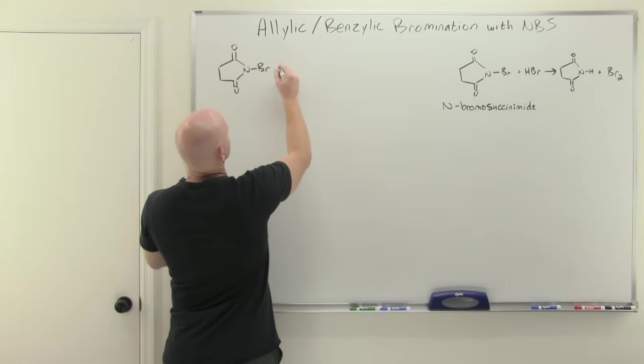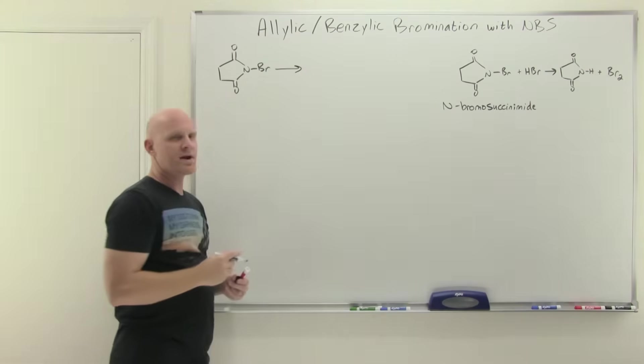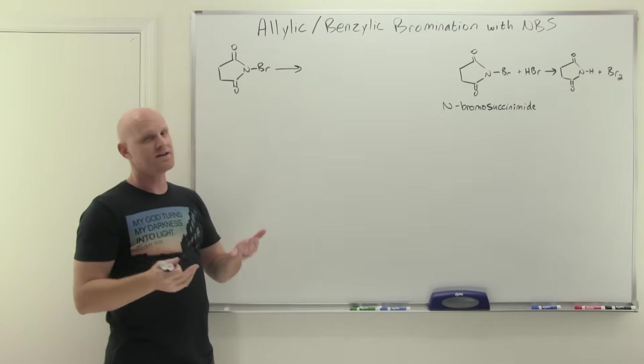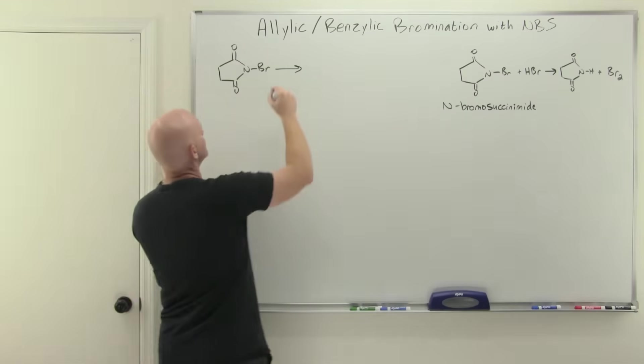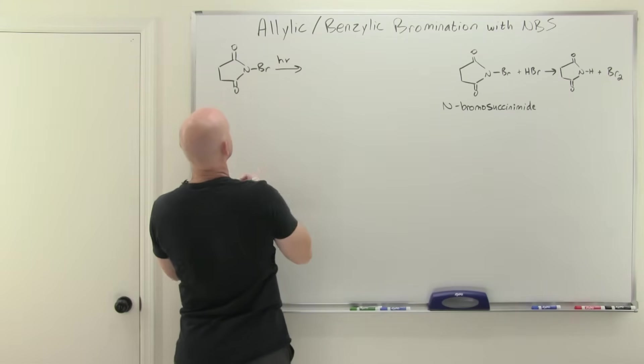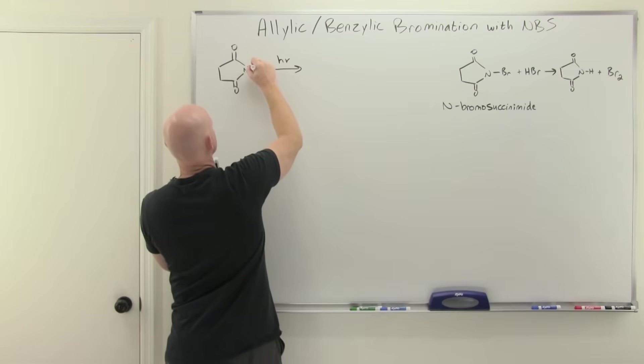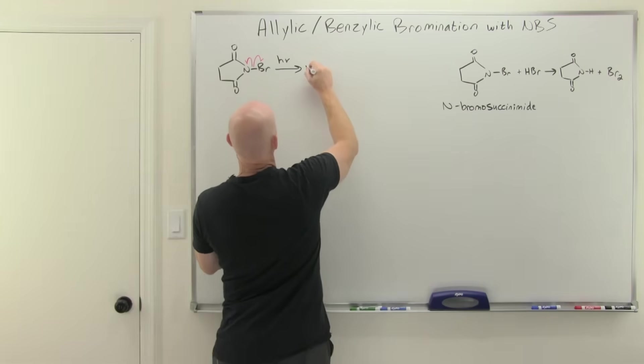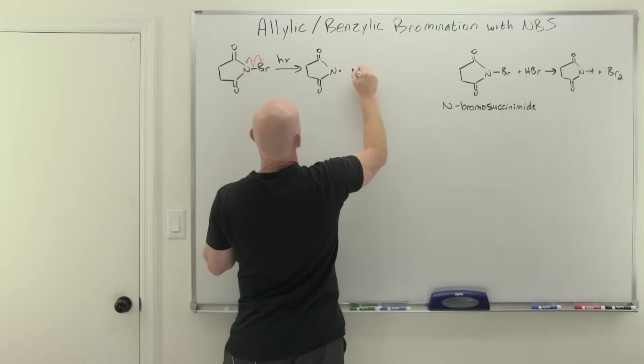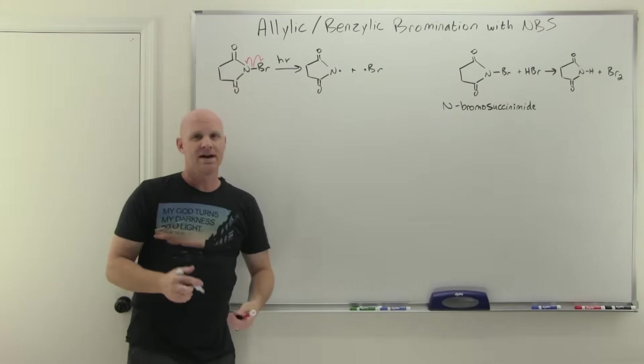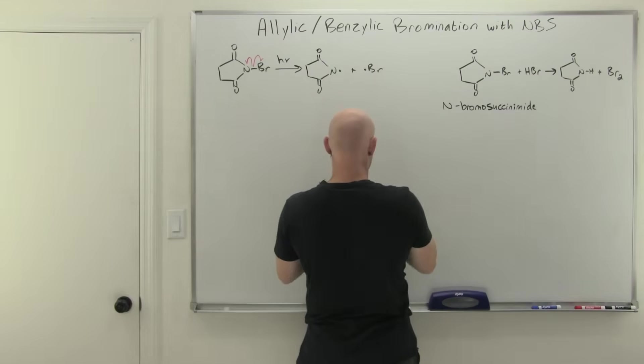All right. So just like with our other free radical halogenations, we've got to get this party started. We've got to do an initiation. We've got to create some radicals. And in this case, again, light, heat, or peroxide, or some other radical chain initiator is going to work. And again, light's the most common. And in this case, we're going to break this nitrogen-bromine bond. Use just the right amount of energy of light, if you will, to cause that to happen. And that's going to create our bromine radical. And so now we've got this party started. That's our initiation reaction.